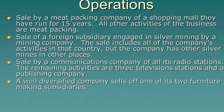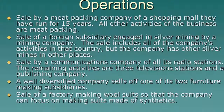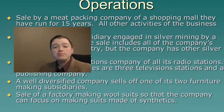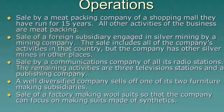Fourth example: a well-diversified company sells off one of its two furniture-making subsidiaries. Definitely not a discontinued operation, because they still have another subsidiary doing exactly the same thing. Fifth example: the sale of a factory making wool suits so they can switch to synthetics. Not a discontinued operation — just changing the input doesn't mean the business itself has changed; they've just changed the way they do that business.